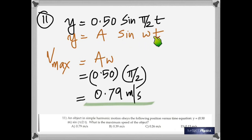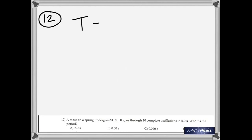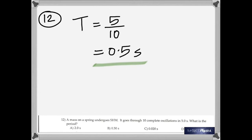The last question: a mass on a spring undergoes SHM and goes through 10 complete oscillations in 5 seconds. What's the period? The period is the time taken for one oscillation, so 5 divided by 10 equals 0.5 seconds. That's the answer, and I hope all these problems now make sense. Thank you and good luck.